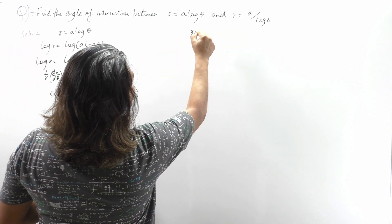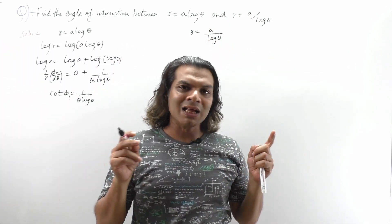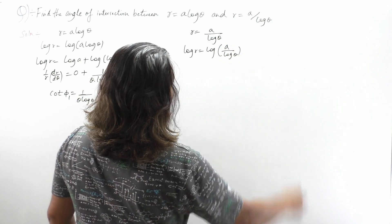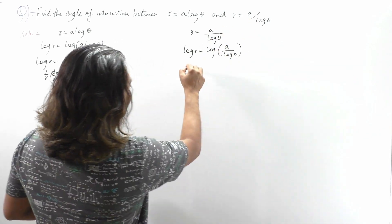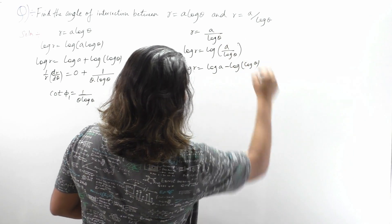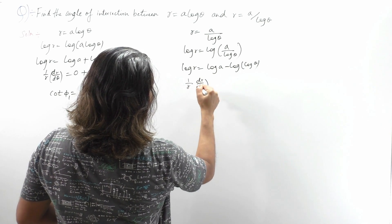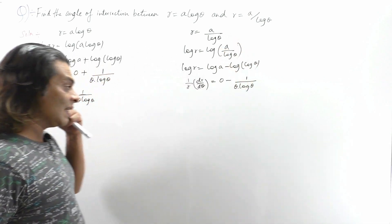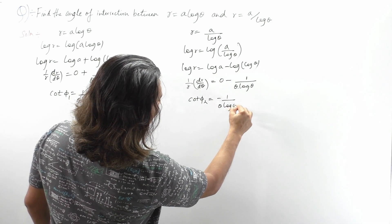For the second curve r = a/logθ: log r = log(a/logθ). Using log(a/b) = log a − log b: log r = log a − log(logθ). Differentiating: 1/r · dr/dθ = 0 − 1/(logθ) · (1/θ). So cot φ₂ = −1/(θ·logθ).